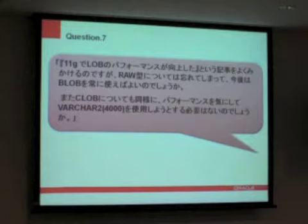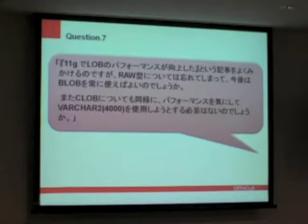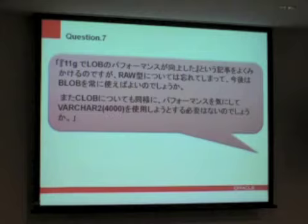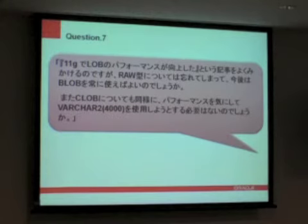Here's another question about large objects versus RAW and VARCHAR2 — when should you use which type? This is pretty easy. If you have binary information, you're going to use RAW or BLOB. If your binary information is always going to be 2,000 bytes or less, use RAW. If it's going to be bigger, use BLOB. Even in a transactional application, you would only use the large object types if your data doesn't fit in the smaller data types.